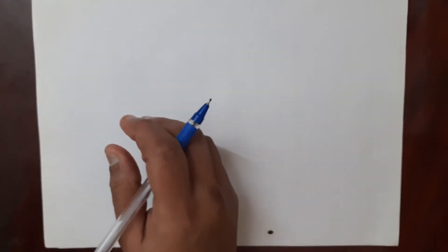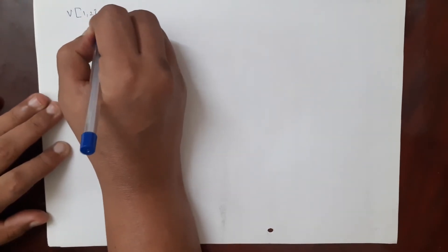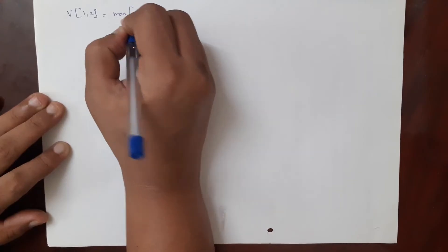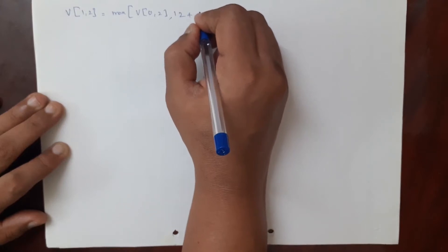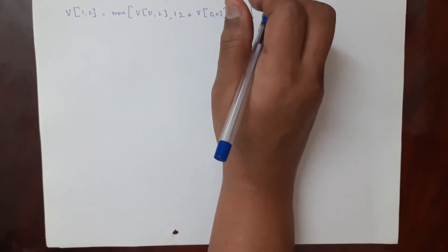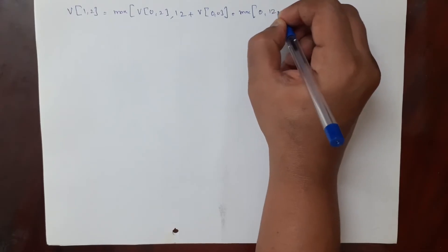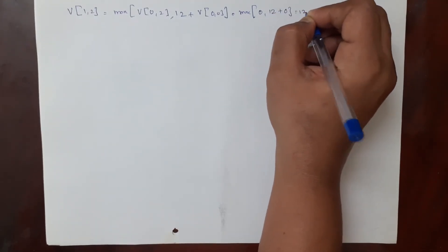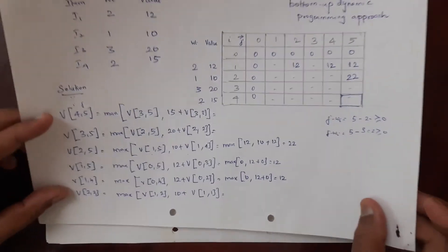First we calculate v of 1 comma 2: maximum of v(0,2), or 12 plus v(0,0). From the table, 0 comma 2 is 0 and 0 comma 0 is also 0. So maximum of 0 or 12 plus 0 = 12. Therefore v(1,2) = 12, and we fill this entry with 12.